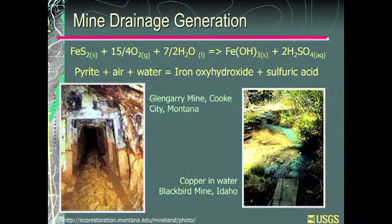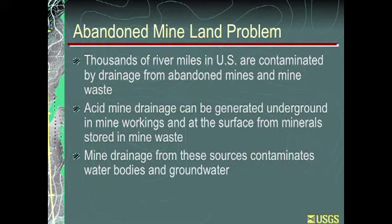Here are some examples. This is a tunnel up in Montana and you can see the accumulation of iron hydroxide, but this water is probably pretty acidic as well. And then this is a tunnel with draining green water — it's so rich in copper that the minerals precipitating out on the bottom are copper-rich minerals. As you probably know, there are thousands of river miles in the U.S. that are contaminated by drainage from abandoned mines and mine waste. Acid mine drainage can be generated underground in mine workings, but also at the surface from minerals stored in mine waste as water flows over those materials. The pyrite can mix with air and water and produce sulfuric acid that causes so many problems.